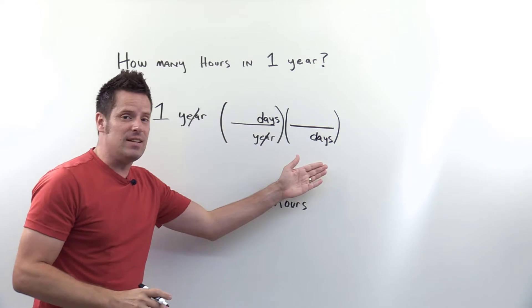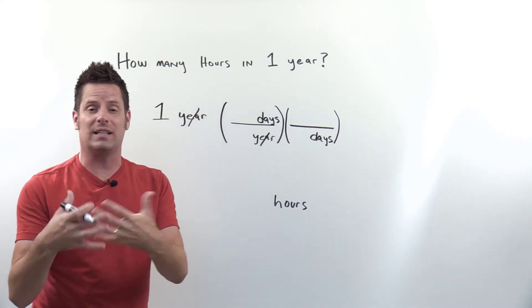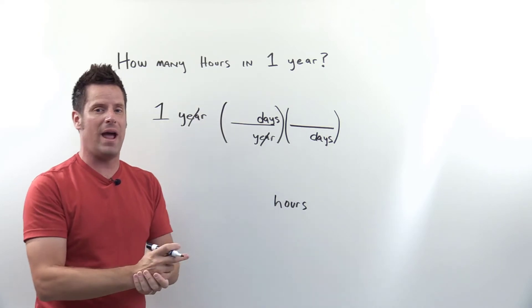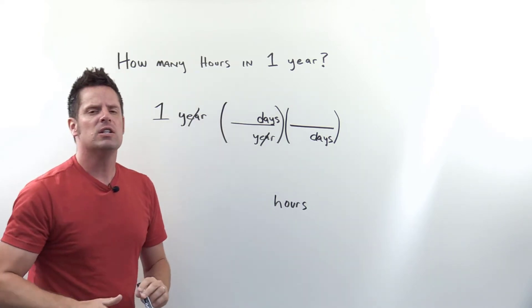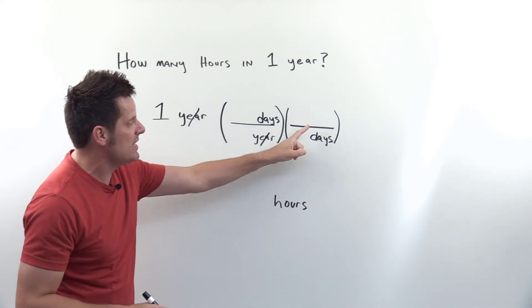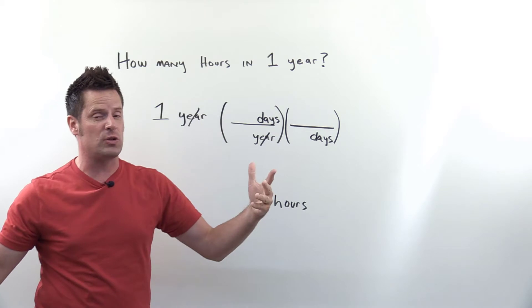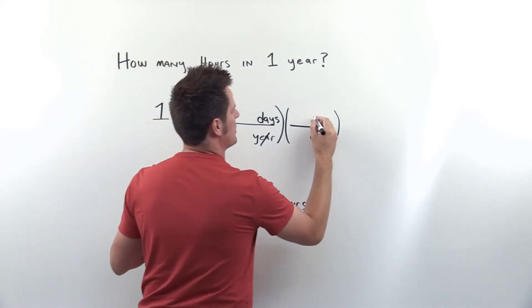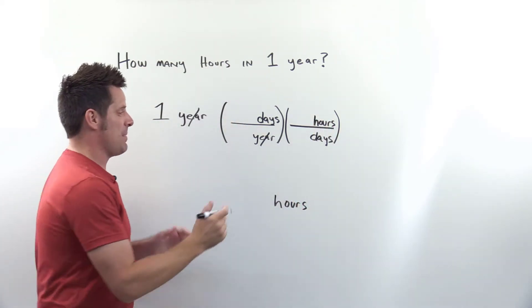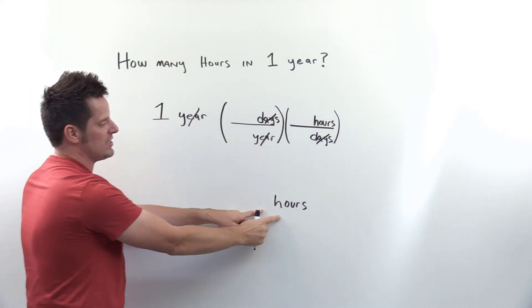Now I need a different unit up top that relates directly to days and gets us closer to hours. Do we know how many hours are in a day? Can I directly relate hours to days? Yes, so I'll put hours on top. We're done with step three because the days cancel out and I'm left with the destination units.